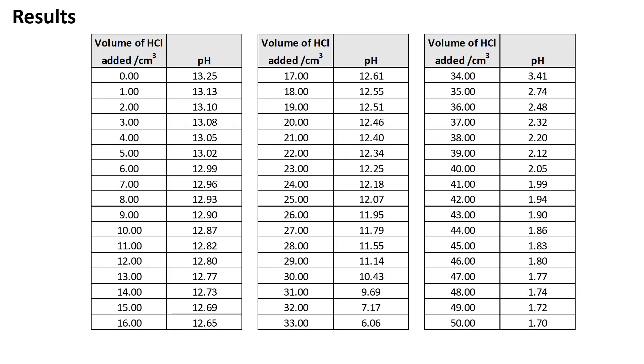Here is a set of exemplar results. You should notice that as the acid is added, the pH goes down. We need to use these results to find the endpoint of the reaction. To do this, plot a graph of pH on the y-axis against volume of HCl added on the x-axis. This can be plotted using a pencil and graph paper or using a spreadsheet package like Excel.